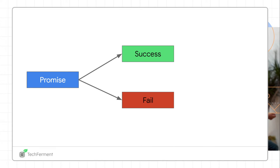In technical terms, a JavaScript promise has two parts — an expression that is either successfully executed or fails. To handle this in JavaScript, we have a resolved and rejected part. If the promise is successfully resolved, we handle it with the then block, and if it is rejected, we handle it with the catch block.